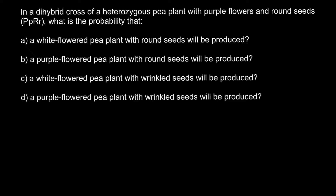This problem is about the dihybrid cross. Usually we build a Punnett square in order to solve such problems, and because we have two traits our Punnett square would have to be 4 by 4 with 16 cells. But today I am going to show you the easy way to solve this problem without spending much time building a large Punnett square. You can apply the same principles to solve many analogous problems.